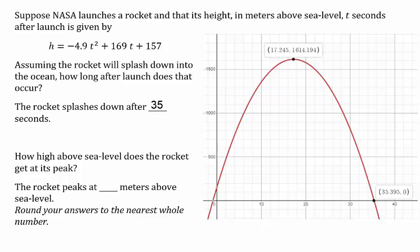How high above sea level does the rocket get at its peak? If you locate the vertex of the parabola, we see that it reaches a height of approximately 1,614 meters above sea level after approximately 17 seconds.